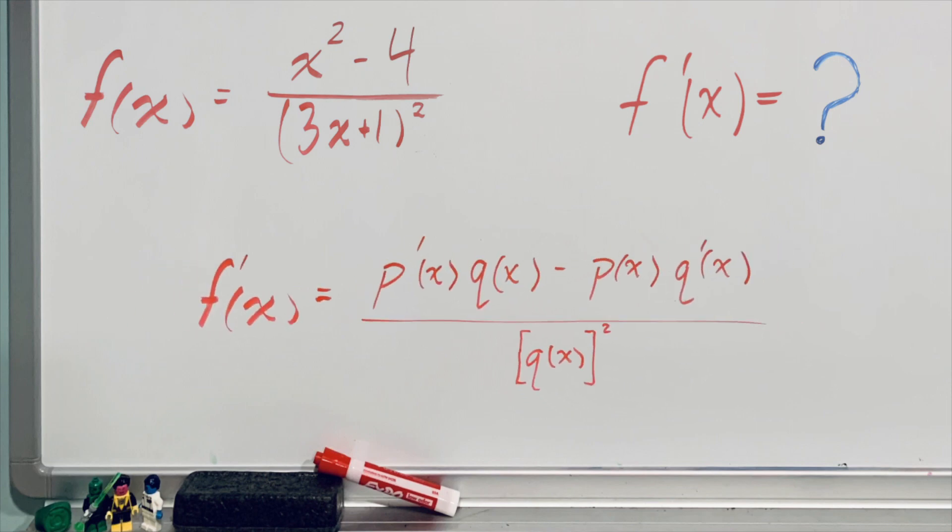So let's say you had a function that was made up of the division of two functions, like this. Now, if you wanted to find the derivative of this function, the quotient rule is helpful.